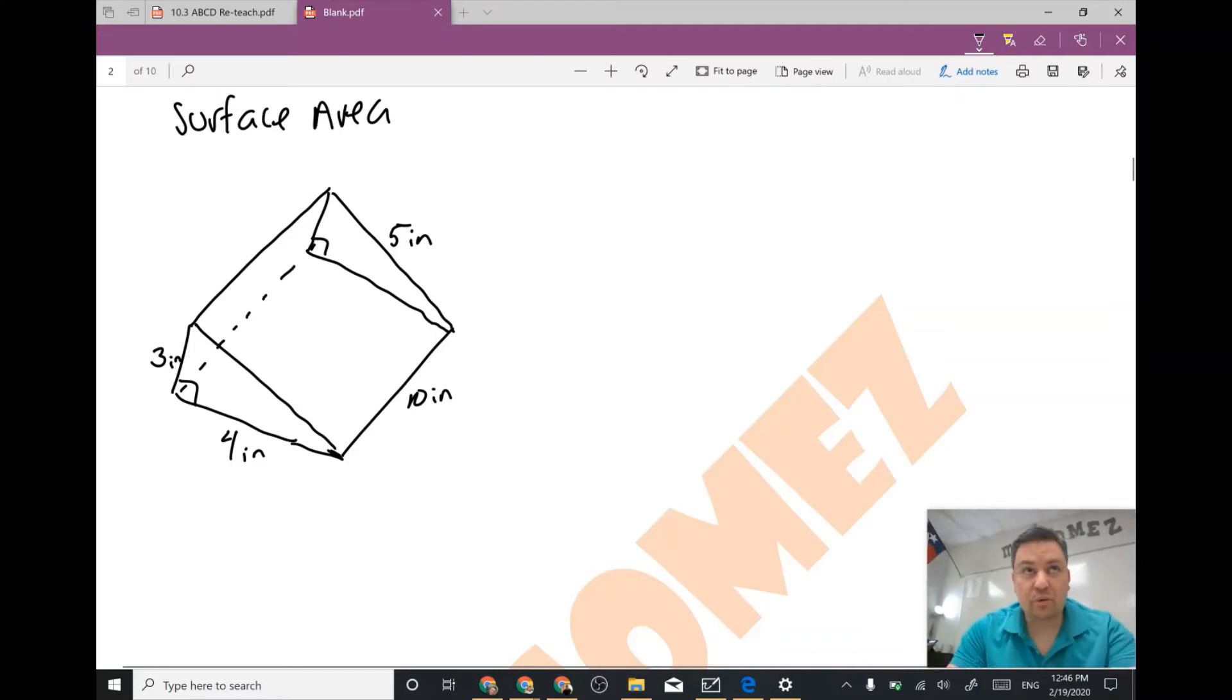How are you doing today guys, this is Alex Gomez, your favorite teacher in the whole world. Today we're going to do surface area, and in this case it's going to be the surface area of a triangular prism with the base given as a shape of a right triangle.